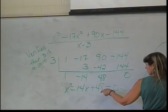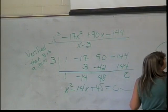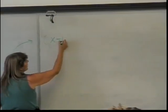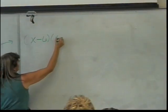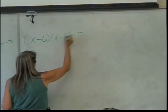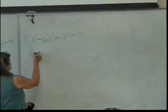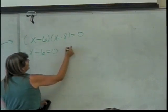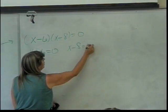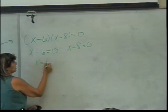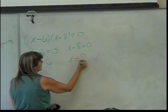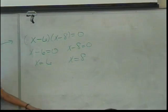It factors into x minus 6 times x minus 8 equals 0, so that gives me x minus 6 equals 0 and x minus 8 equals 0. This gives me x equals 6, and this gives me x equals 8. Now, here's my question for you. This problem said find all the other zeros. What should my answer be, if this was the question in Webwork?